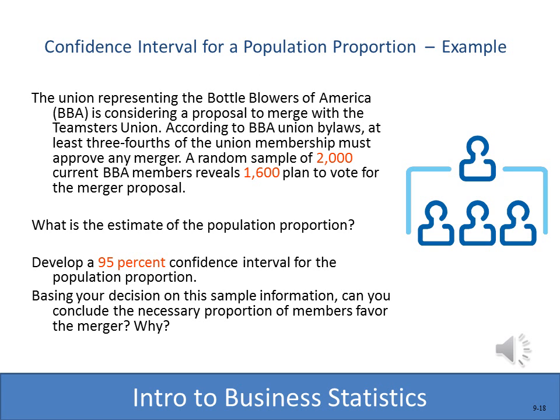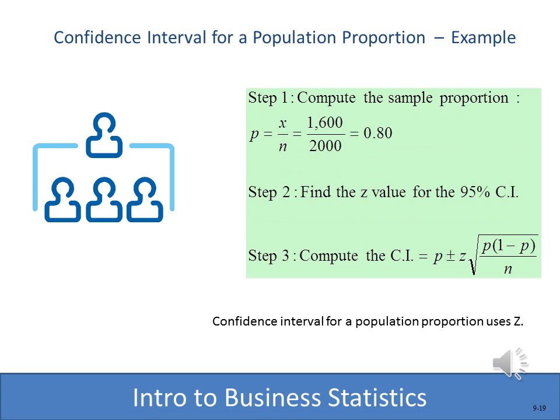Here's a proportion confidence interval example. The BBA union is considering merging with the Teamsters. BBA bylaws require at least 75% approval. A random sample of 2,000 members shows 1,600 plan to vote yes, giving a sample proportion of 0.8. The z-value for 95% confidence is 1.96. Plugging in all values gives a margin of error of 0.018, so the 95% confidence interval runs from 78.2% to 81.8%. We can say with 95% confidence that at least 75% would vote for the merger.